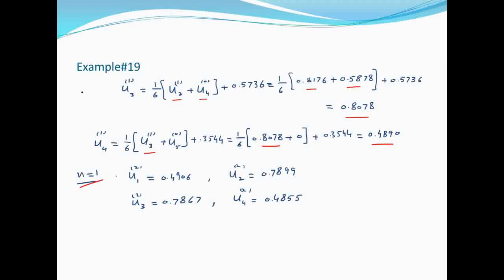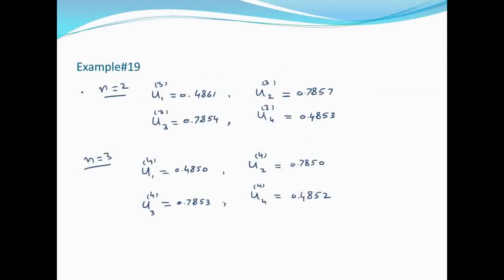n=1 put करने पर second iteration आएगी। इसी तरह पिछली values use करते हुए second iteration की values मिलेंगी। n=2 से third iteration, n=3 से fourth iteration आएगी। आप इन values को calculate और verify करें।